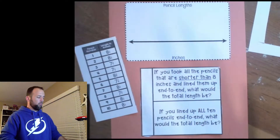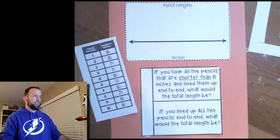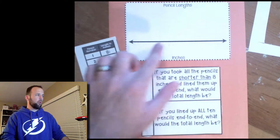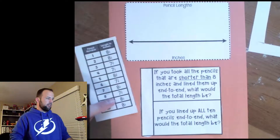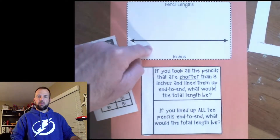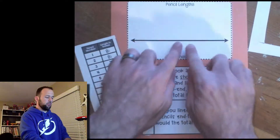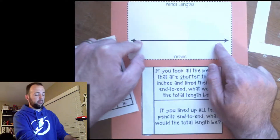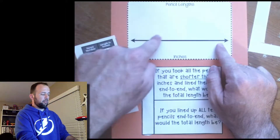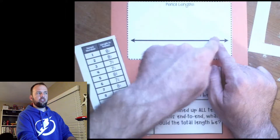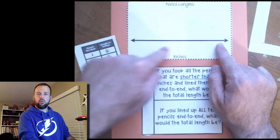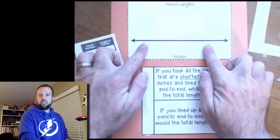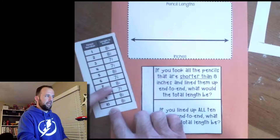What we have here is some data and the start of a line plot. We have to put the different lengths of these ten pencils onto this line plot. The first thing we need to do is figure out what we're going to put along the number line, because that's essentially what a line plot is. We use a number line, and up here we chart how many of each length we have going along that number line.